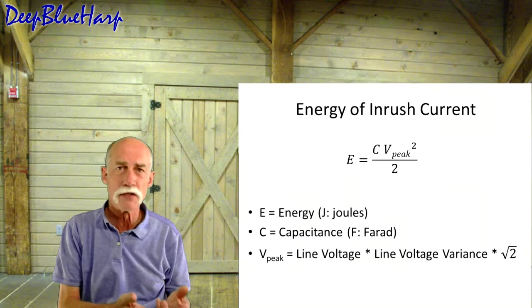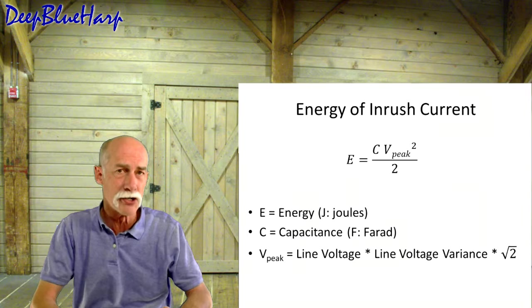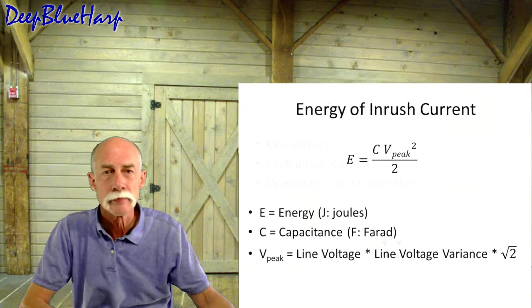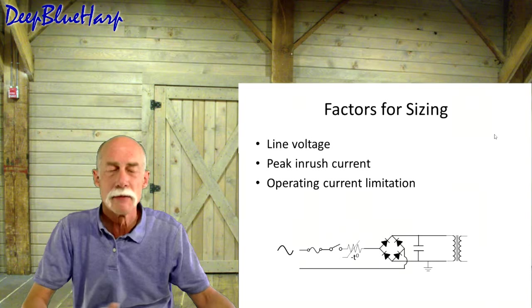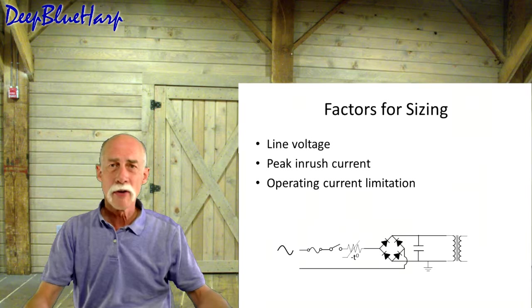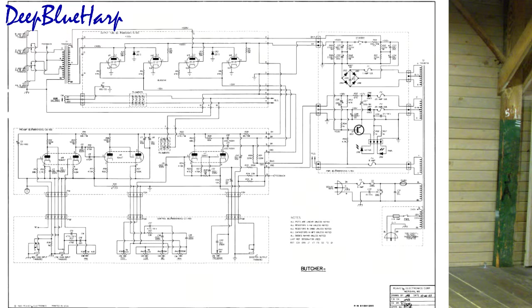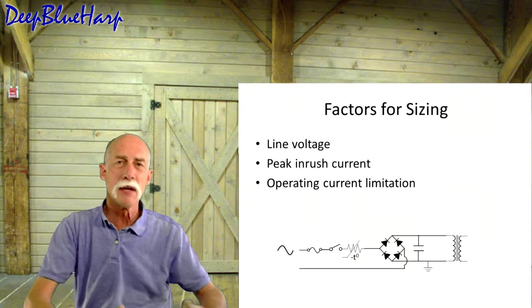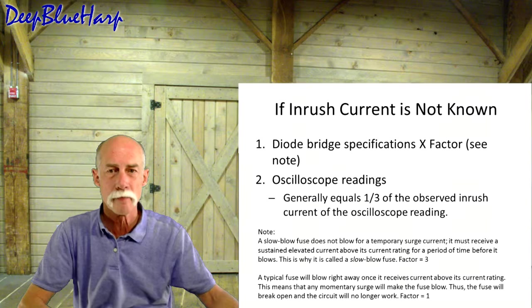Energy of inrush current. It is a capacitive value and a voltage value. That's the only two things that we need to know to calculate the energy required due to the inrush current. Factor for sizing. We need to know something about the line voltage, the peak inrush current, and the operating current limitation. You're probably thinking, well, where do I get that? You get it from here. We need to get to the schematics. The design engineers, they put this information there, and there's a few clues where we go look for this information we need. It's rather easy.